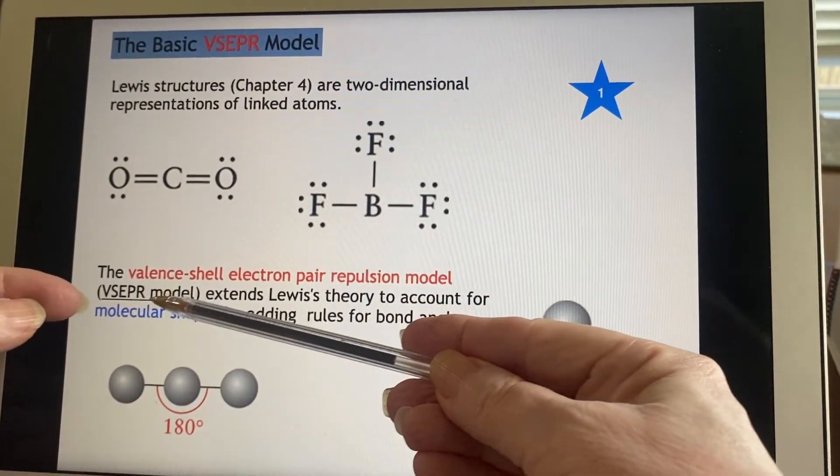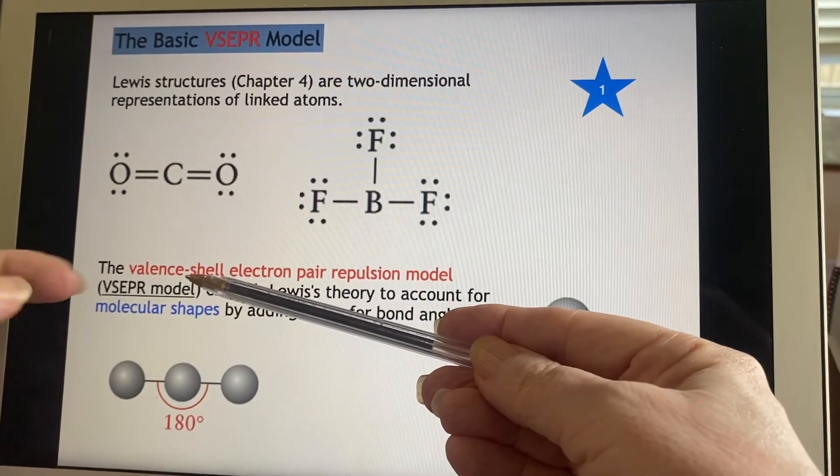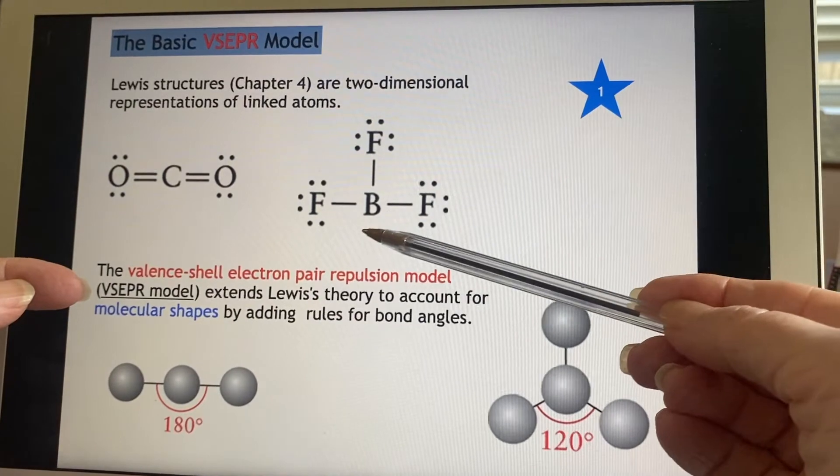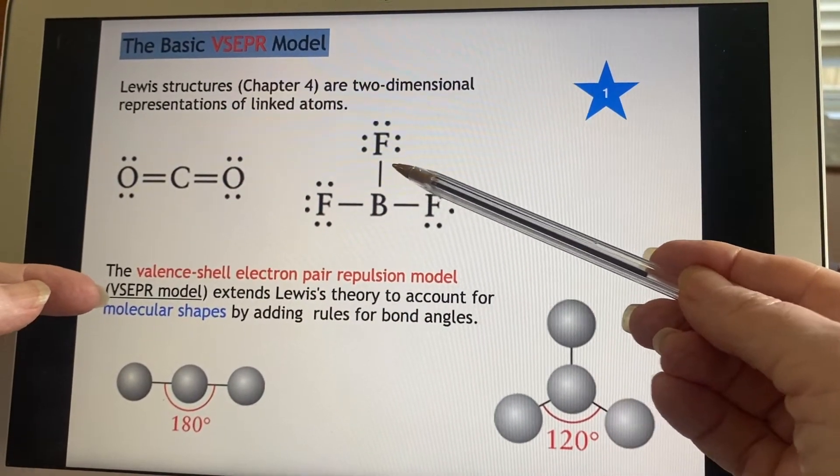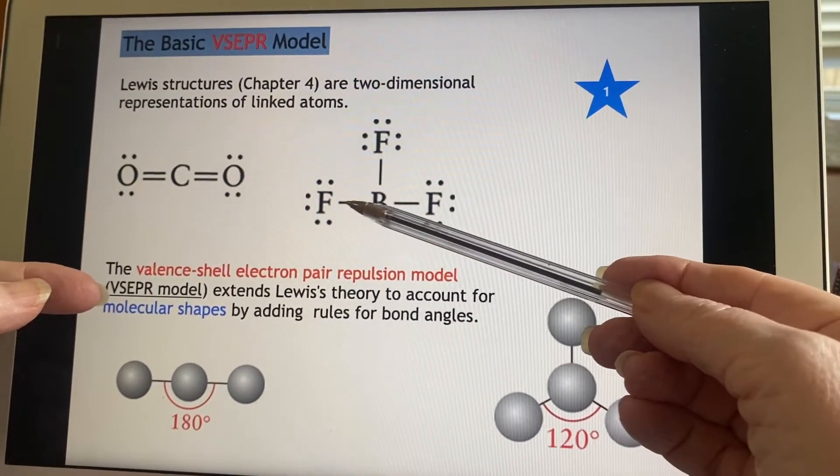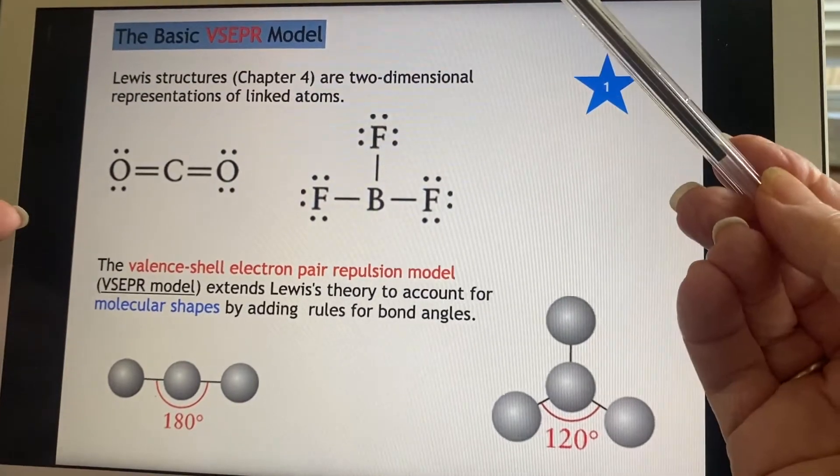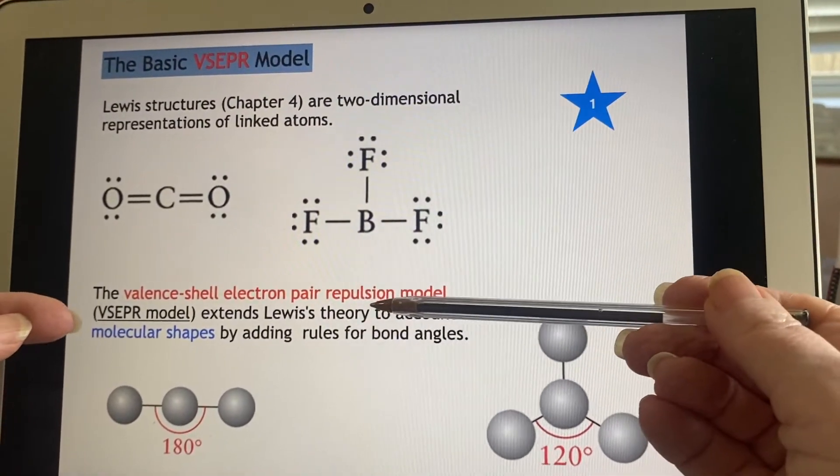So what does VSEPR, V-S-E-P-R, stand for? Valence shell. Okay, valence shell. Those were the electrons we were using to make up Lewis's structures, right? Electron pair. Okay, well, these are all electron pairs, right? If it's a bond, it's a pair of electrons. And here's a lone pair, clearly a pair of electrons from the name.